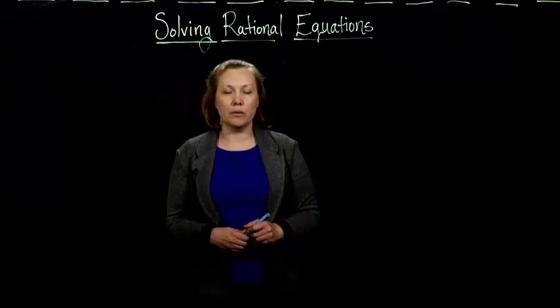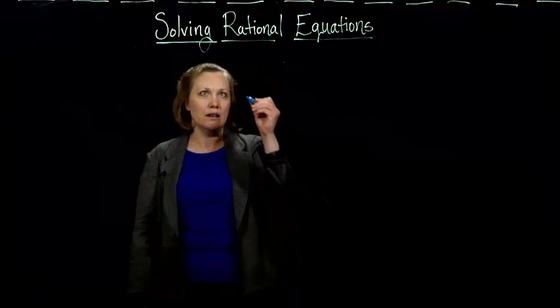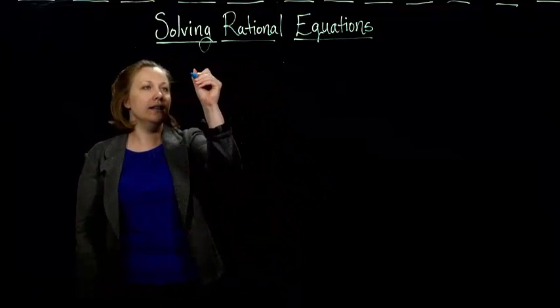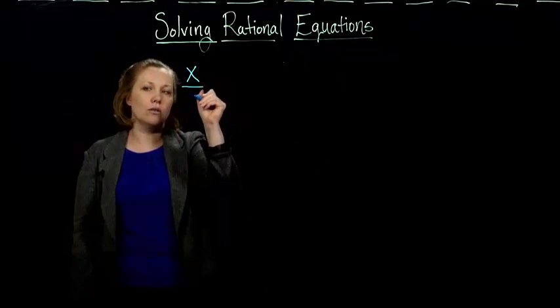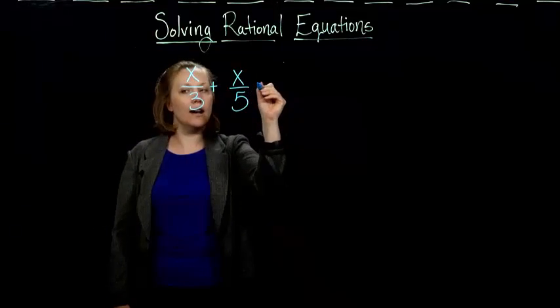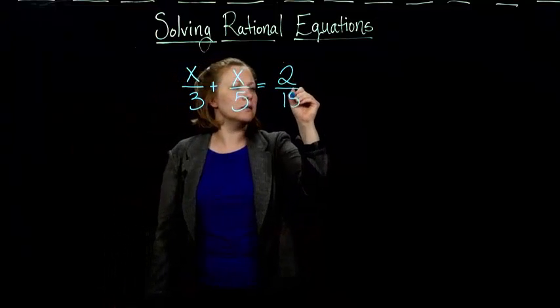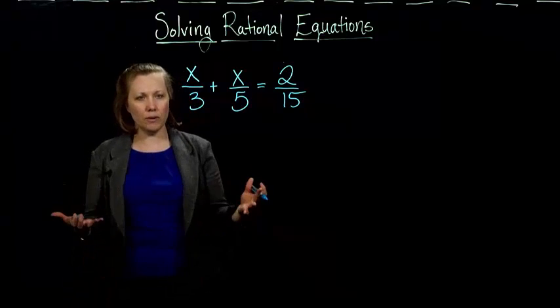Sometimes you might get a rational equation that has more than one fraction in it. So what do you do then? Let's say we had something like x over 3 plus x over 5 equals, I don't know, 2 fifteenths. So what do we do with that?